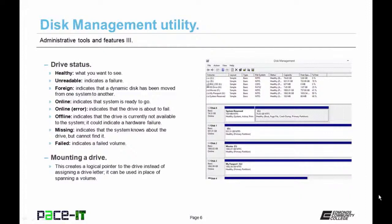There are several different drive statuses. Healthy is what you want to see. Unreadable indicates a failure. Foreign means a dynamic disk has been moved from one system to another. Online means you're ready to go. Online error is an indication the drive is about to fail — do something about that. Offline means the drive is not available to the system and could indicate hardware failure. Missing means the system knows about the drive but can't find it. Failed is self-explanatory.